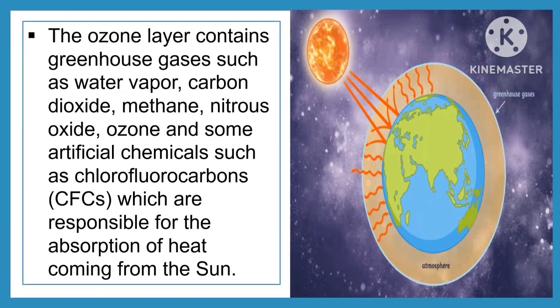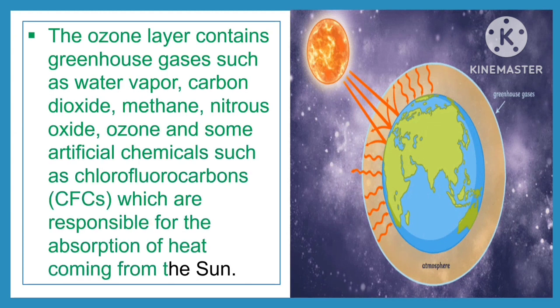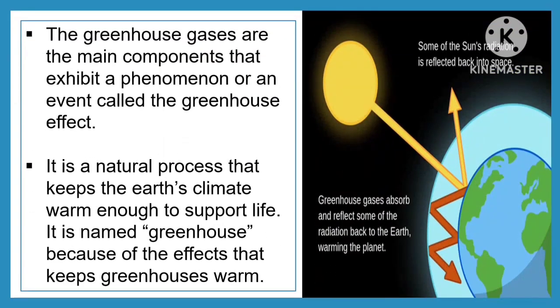The ozone layer contains greenhouse gases such as water vapor, carbon dioxide, methane, nitrous oxide, ozone, and some artificial chemicals such as chlorofluorocarbons or CFCs, which are responsible for the absorption of heat coming from the sun.